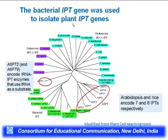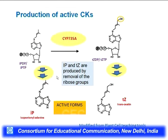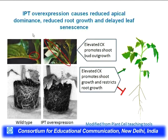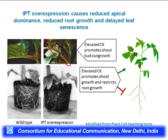Plant IPT genes were identified by looking at homologs of bacterial IPT genes, and many IPT genes have been identified from different plant systems. Biosynthesis completes as follows: first, ribose, adenine, and isopentenyl group come together; then the ribose sugar is slowly removed and the functional cytokinins are generated. IPT is the rate-limiting factor. If IPT is overexpressed, there will be more cytokinin, which promotes shoot bud outgrowth and suppresses root growth.